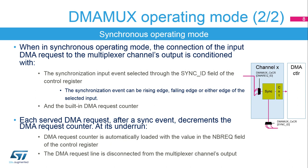Each DMA request line multiplexer can individually be set to synchronous operating mode by setting the synchronization enable bit in its corresponding multiplexer channel control register DMA-MUX-CX-CR. The DMA request router has multiple synchronization inputs. The synchronization inputs are connected in parallel to all multiplexer channels. When a multiplexer channel is in synchronous operating mode, the effective connection of the selected input DMA request line to the multiplexer channel's output is conditioned with events on the selected synchronization input and on a built-in DMA request counter.